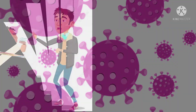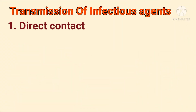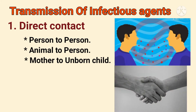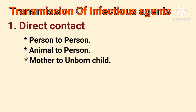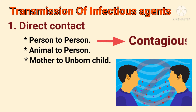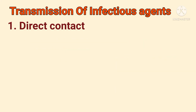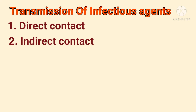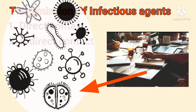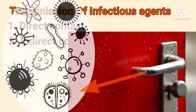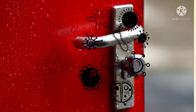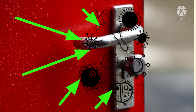Infectious diseases can spread in a variety of ways, like direct contact such as person to person, animal to person, or mother to unborn child. Infectious diseases that spread from person to person are said to be contagious. Indirect contact — many germs can survive on an inanimate object such as a tabletop or door knob. When you touch a door knob handled by an infected patient, you can pick up the germs.